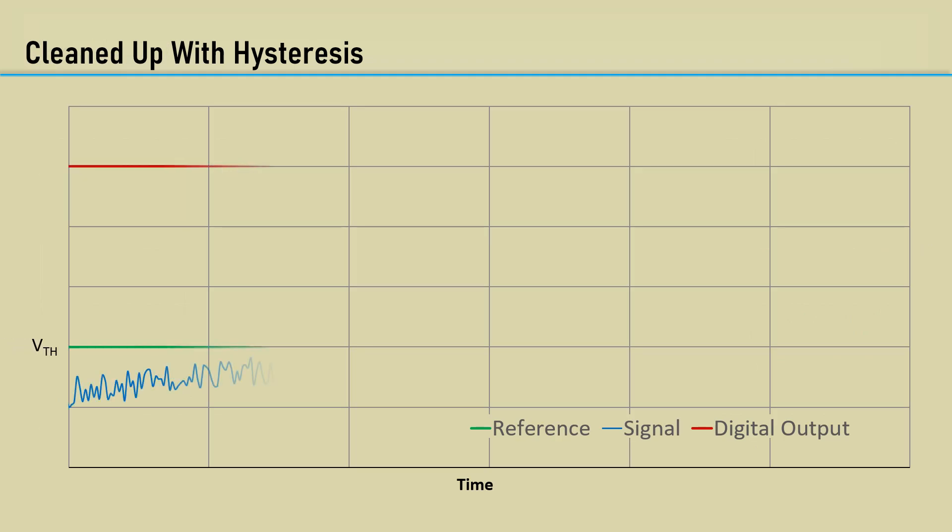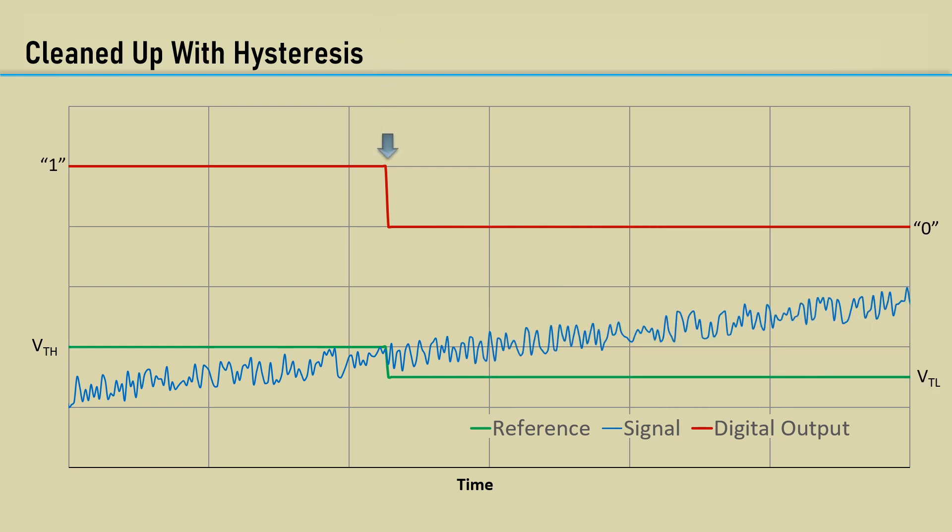This can be alleviated. Here is the noise signal again. When the output goes low, positive feedback lowers the reference threshold below the noise level, and a solid clean output is achieved. This dual threshold action is called hysteresis.